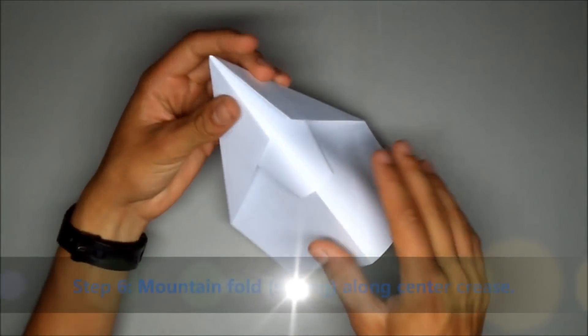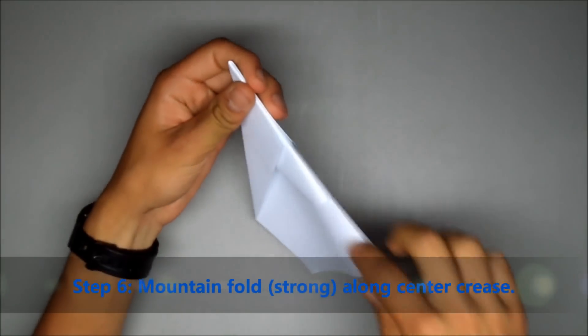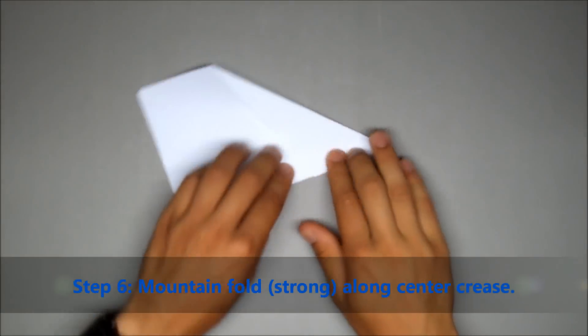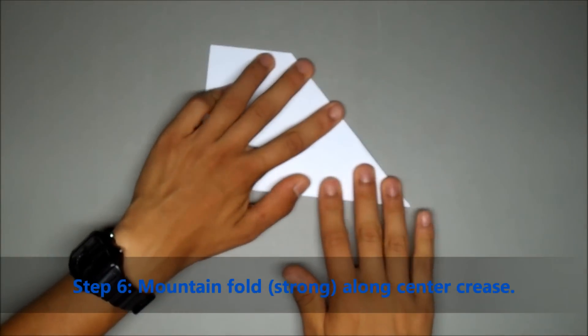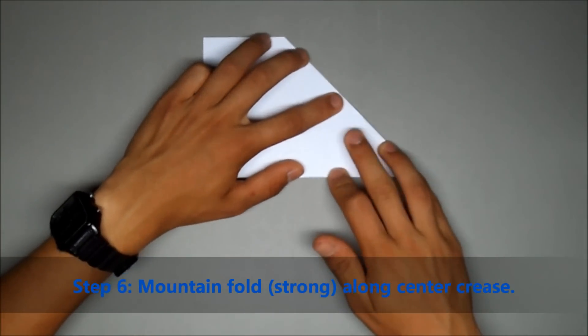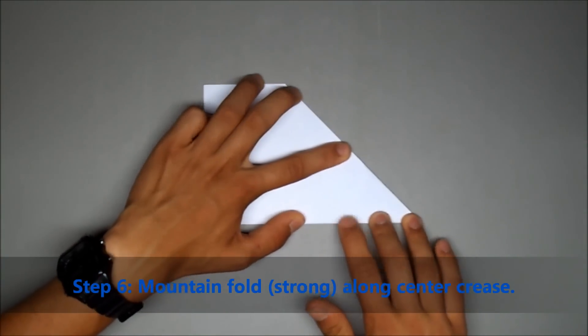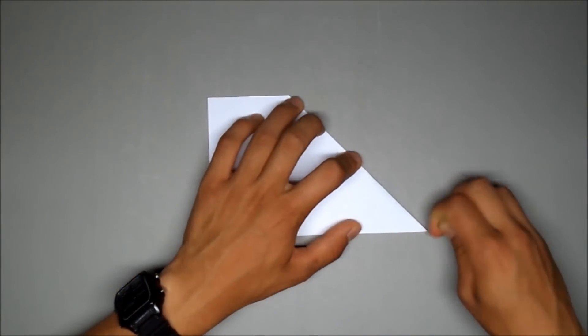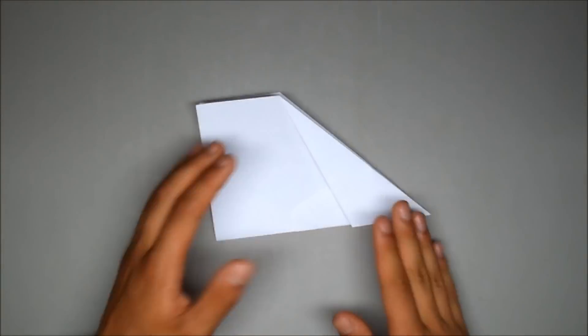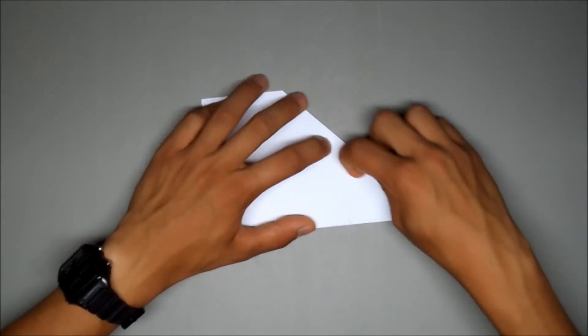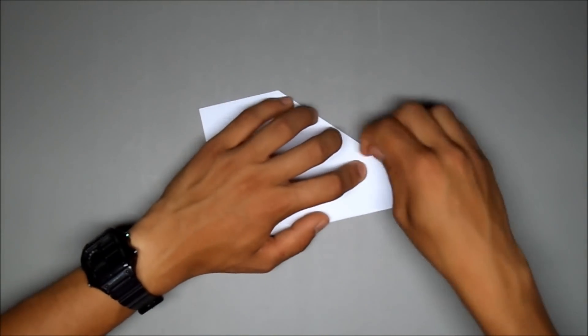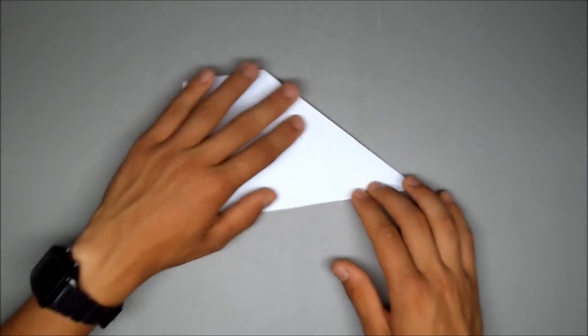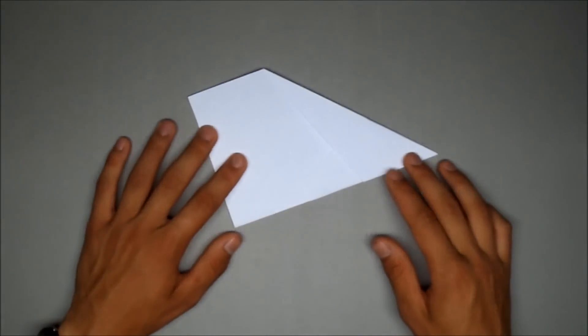Next step, fold it back on itself along the center crease and it should look like this. Alright, and if at any point when you're doing any of these steps it starts to bubble up or looks like the creases might not be flat, just redo everything. Just make sure you press it down so it's really nice and flat. That'll make it streamlined and it'll fly super straight.